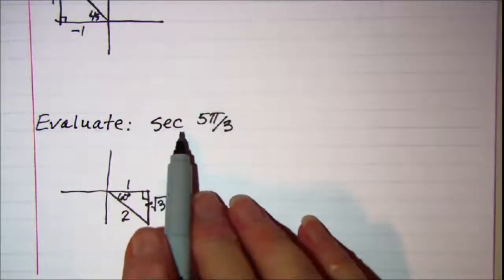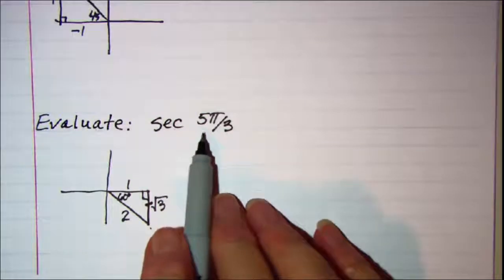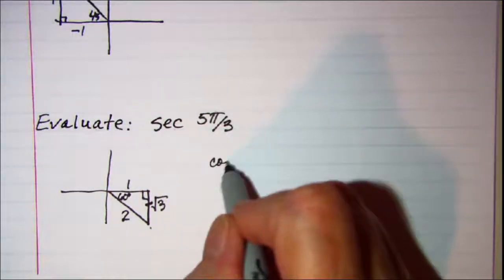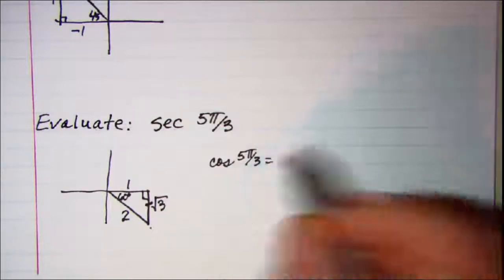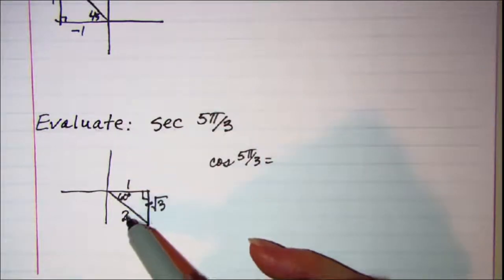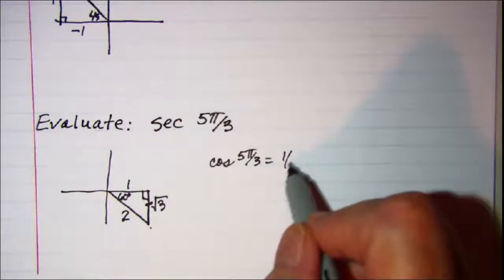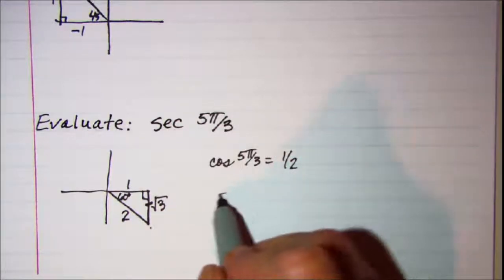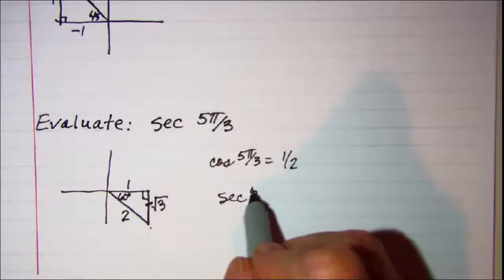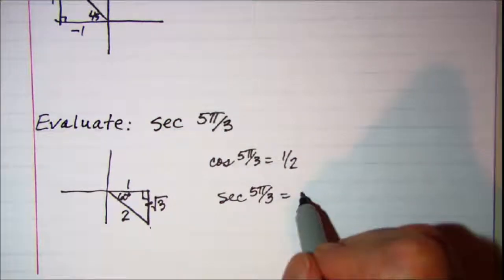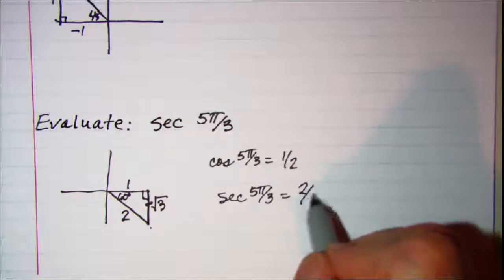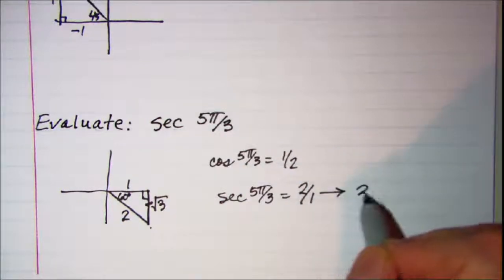Now secant is the reciprocal of cosine. So if I look at my cosine of 5 pi over 3 I know that that's adjacent over hypotenuse. So that's 1 half which means my secant of 5 pi over 3 is the reciprocal of that. So 2 over 1 which is just 2.